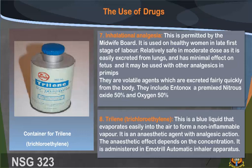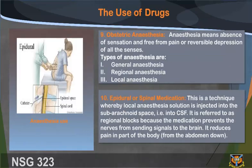8. Trilene (trichloroethylene): this is a blue liquid that evaporates easily to form a non-inflammable vapor. It is an anesthetic agent with analgesic action. The anesthetic effect depends on the concentration. It is administered in an EMO automatic inhaler apparatus.